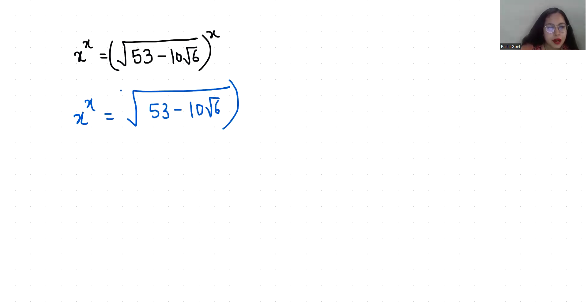First I am going to multiply with power 1 by x both sides, so x equals the square root of 53 minus 10 root 6.